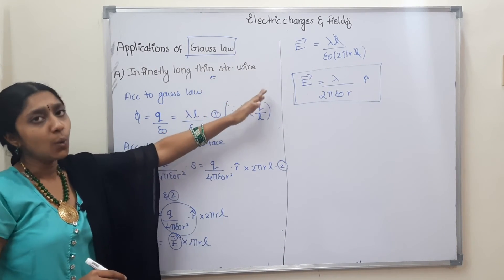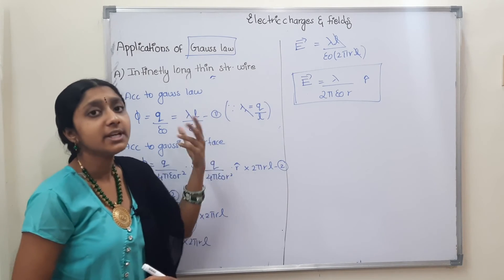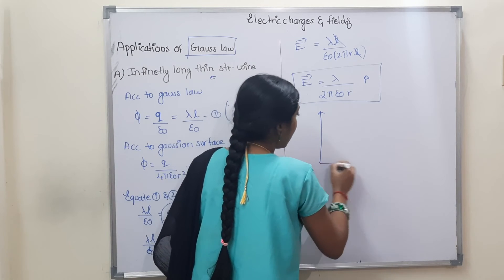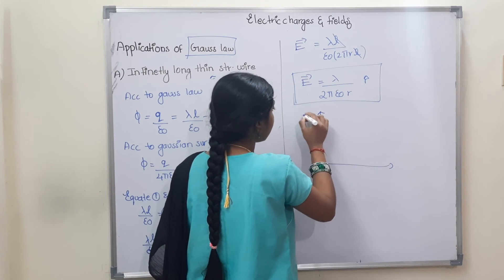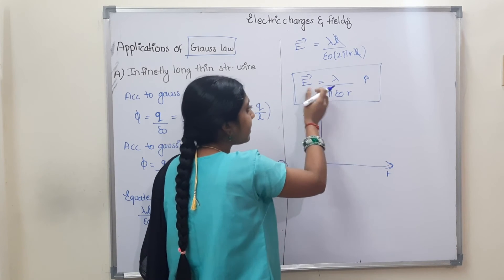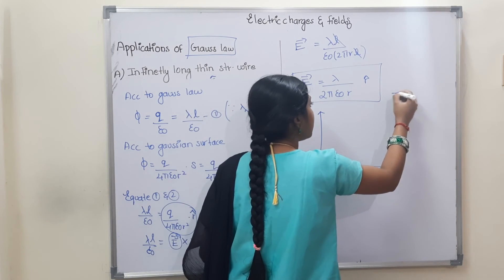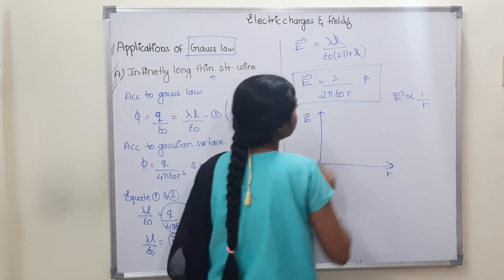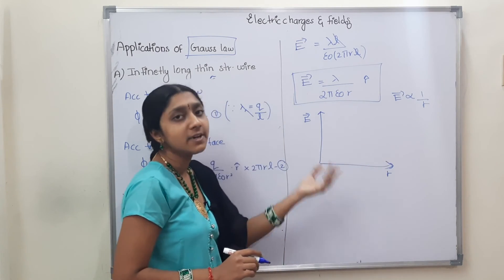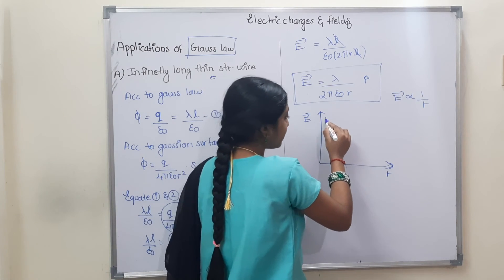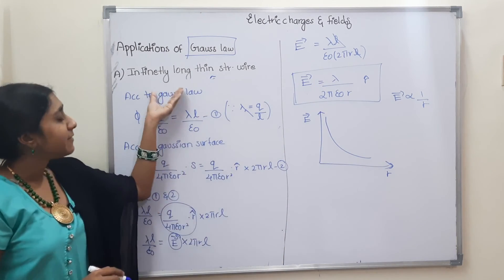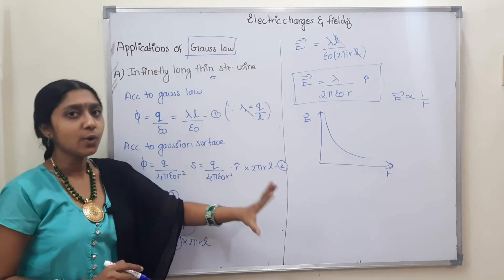So the electric field for an infinitely long, thin, straight wire is derived. For the graph, the electric field is on one axis and R is on the other. Since the electric field is inversely proportional to R (E ∝ 1/R), the graph is a hyperbola. This is the graph for an infinitely long, thin, straight wire.